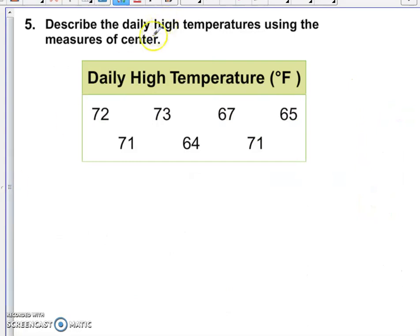Final example. Describe the daily high temperatures using the measures of center. Now when they tell you to use the measures of center, that means they're asking you to use mean, median, and the mode. The mode is pretty easy. Just look to see which number appears most often. I see a couple of 71s. I don't see anything else in common. So the mode is 71.